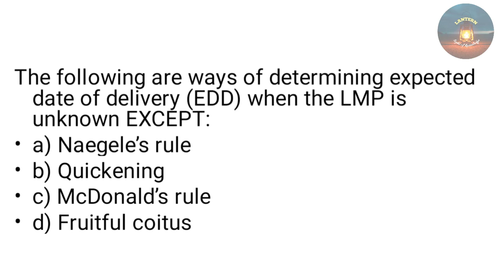The following are ways of determining the expected date of delivery when the LMP is unknown, except — Naegele's rule, quickening, McDonald's rule, or fruitful coitus? The answer is Naegele's rule, because in Naegele's rule we calculate the expected date of delivery by knowing the LMP.